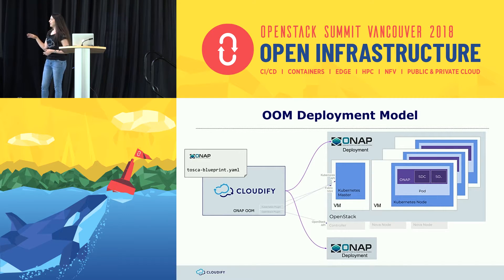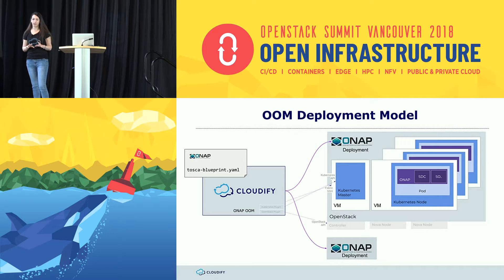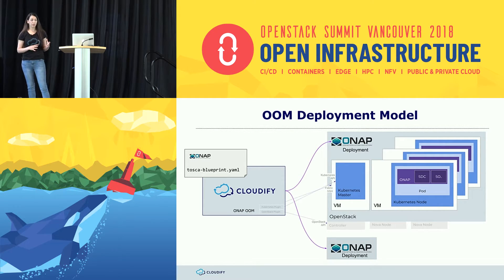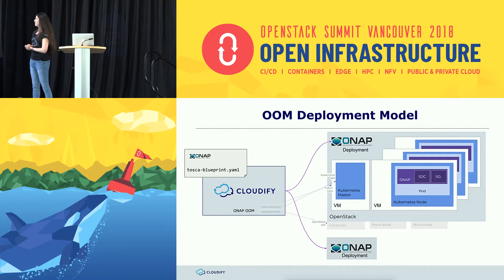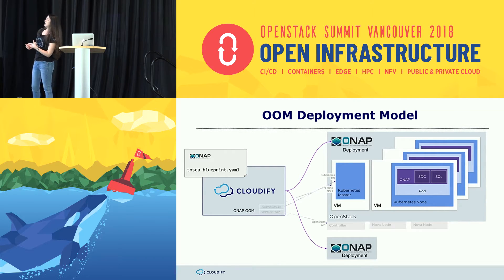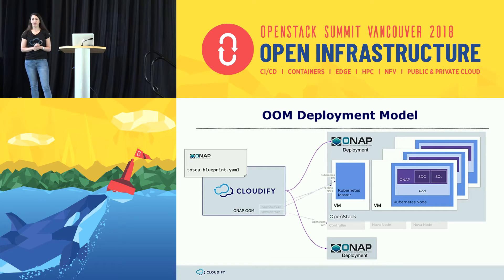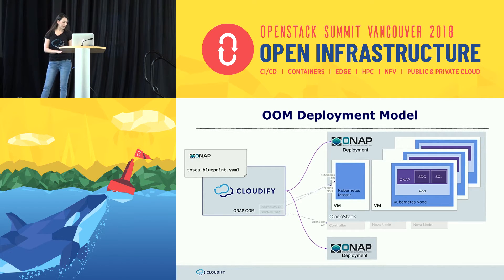The deployment model is very flexible — it doesn't have to be only a single instance of the whole ONAP architecture that is brought up. You can bring up more than one. If it's a multi-cloud or multi-environment setup, this architecture can be replicated. The cool thing about orchestration and automation is that this happens with a click of a button — you can deploy it once, twice, many times. But it doesn't necessarily have to be deployed multiple times because of a different environment. We also see testing environments and production environments, and we want to make sure the model fits all of those. OOM was built in a very flexible manner to support this.